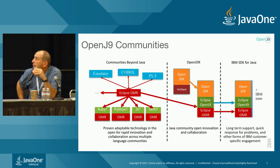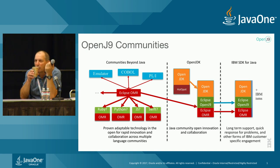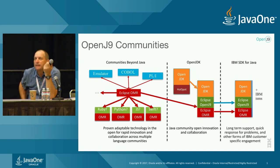It's not just a source code dump. We didn't just take our code and dump it into an open source project. We are developing actively at both Eclipse OMR and Eclipse OpenJ9. If you go and look at the Eclipse OMR project, which we open sourced in March 2016, there's a ton of activity — more than 3,000 commits over that time period, on the order of 20 to 40 commits happening per week.